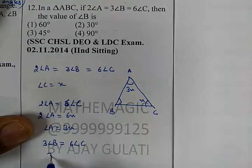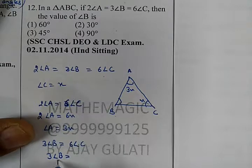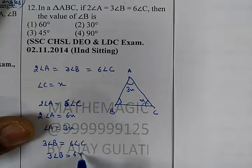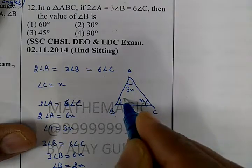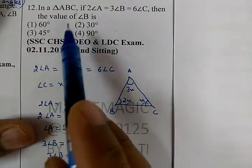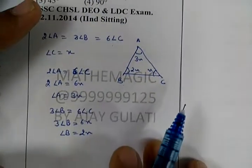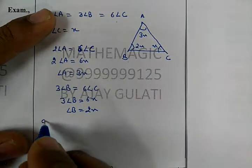is equal to six times angle C. And twice of angle B is equal to 6X. Angle B is equal to 3X. We have angle B is equal to 3X.